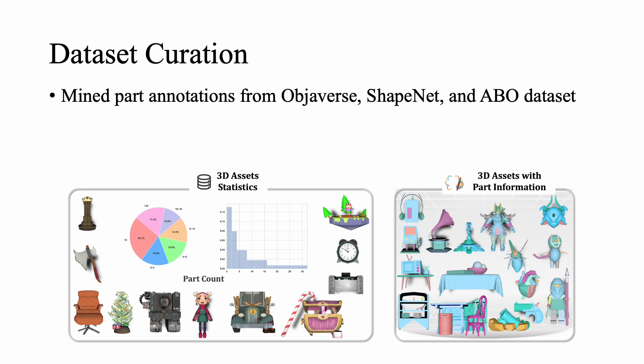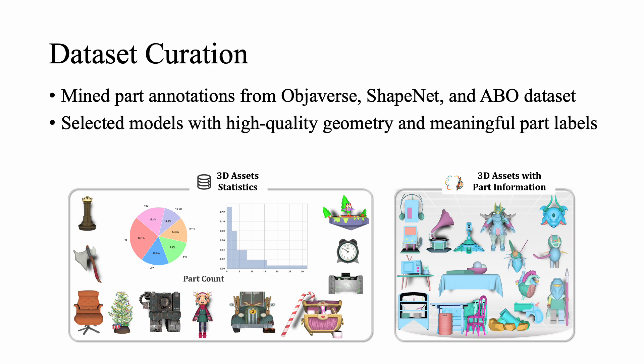For training, we curated a large-scale dataset by mining part annotations from Objaverse, ShapeNet, and ABO. We selected models with high-quality geometry and meaningful part labels. In total, we collected 50,000 part-labeled 3D objects and around 300,000 individual parts.